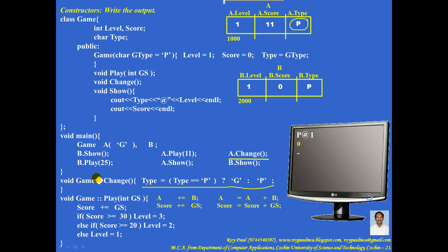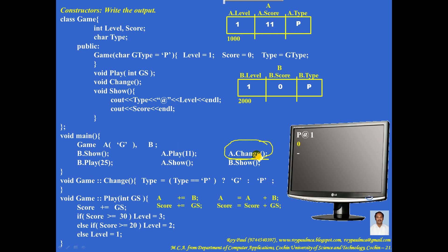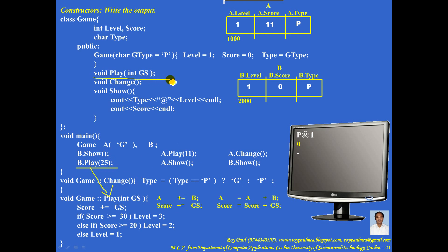After executing the function, control goes back to where it was called. Now the next line: a function is encountered and control reaches where it is defined. Argument 25 is passed to parameter GS, so GS contains 25.